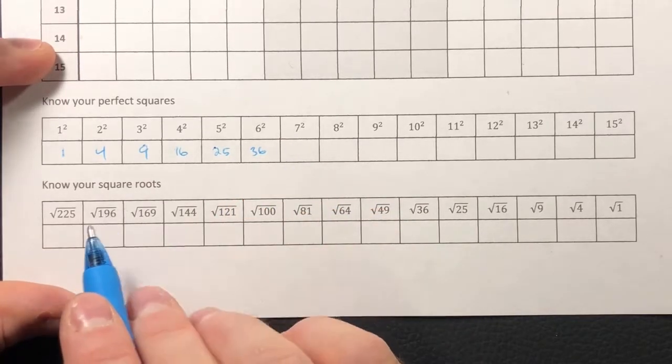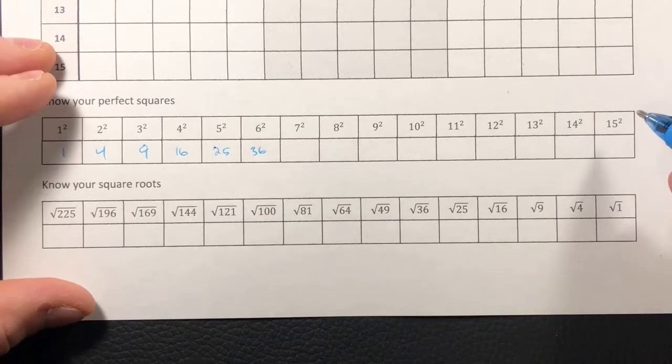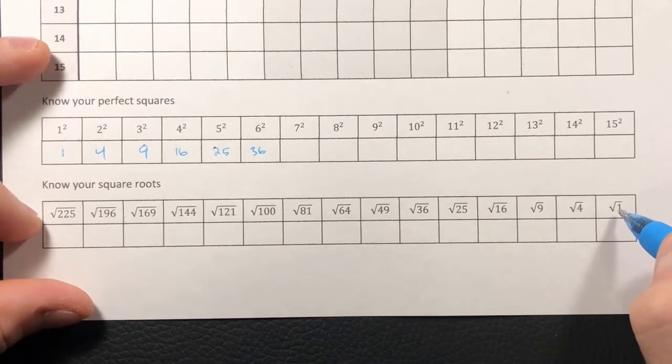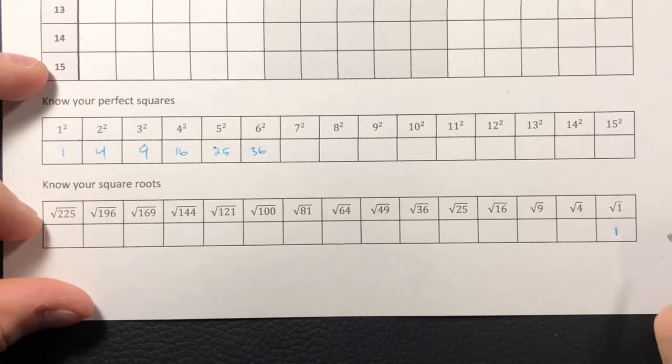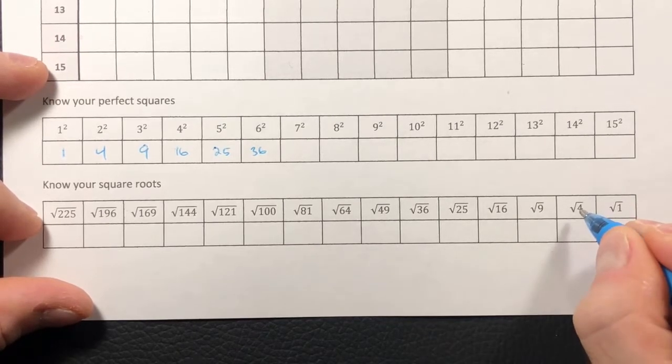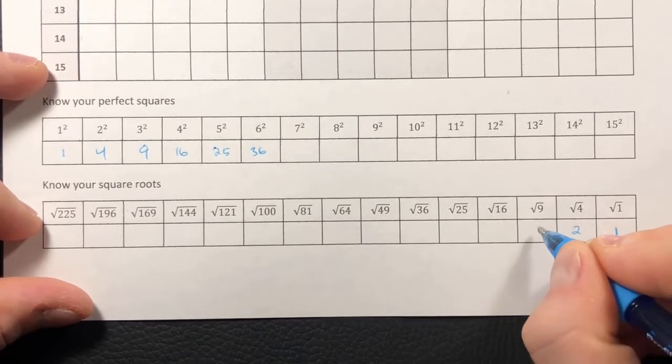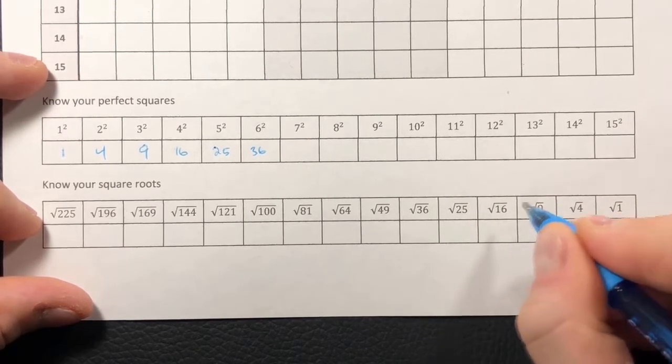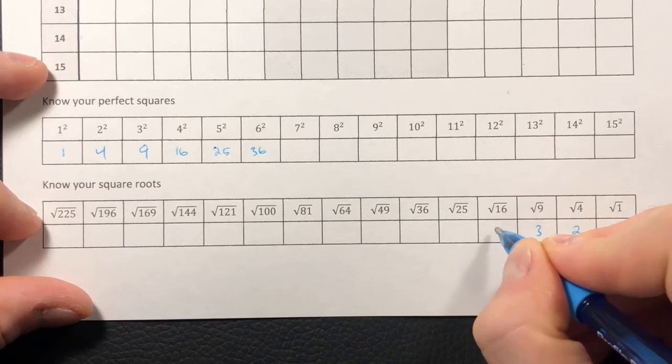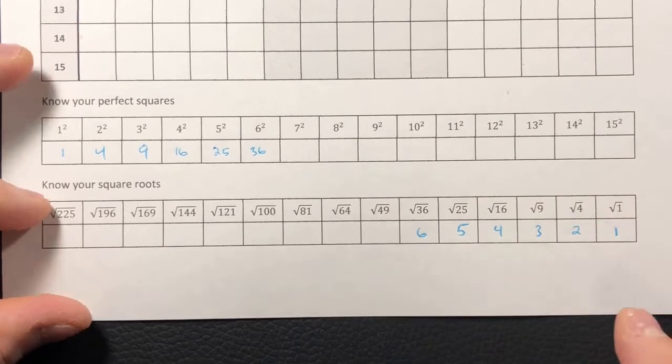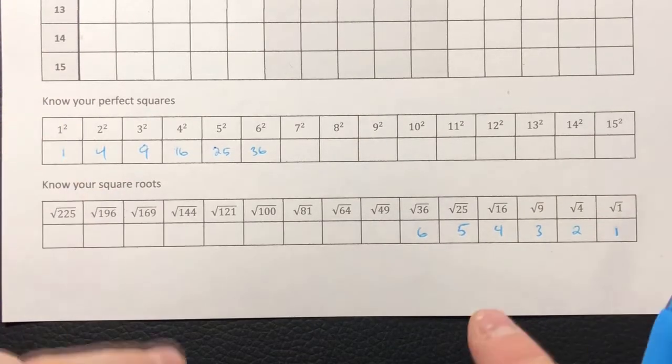Same thing with our square roots. We need to be able to recognize the square roots, which are, spoiler alert, the reverse of these. So what number multiplied by itself gives me one? Well, one times one gives me one. What number multiplied by itself gives me four? Two times two gives me four. Three times three gives me nine. So that would mean the square root of 16 is four. The square root of 25 is five. The square root of 36 is six. Do you notice how these correlate between themselves?